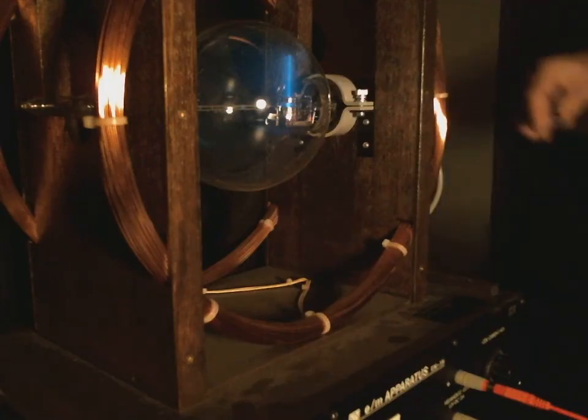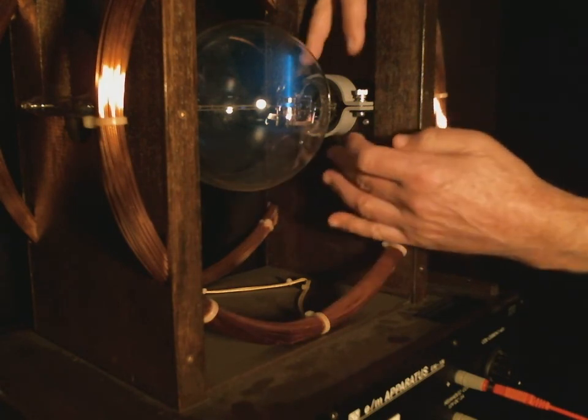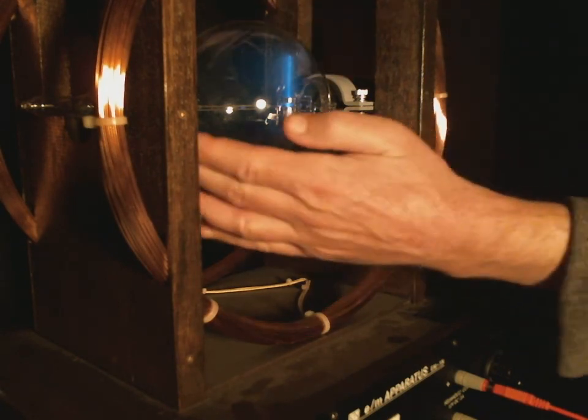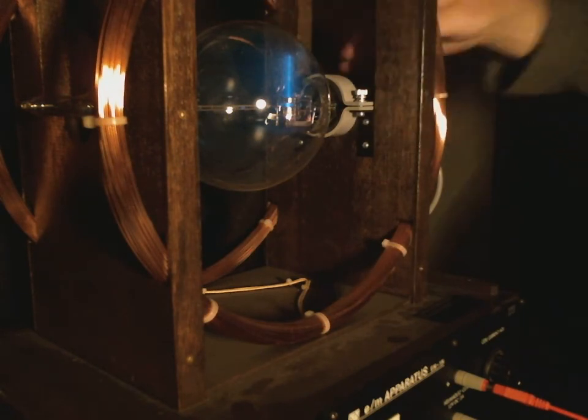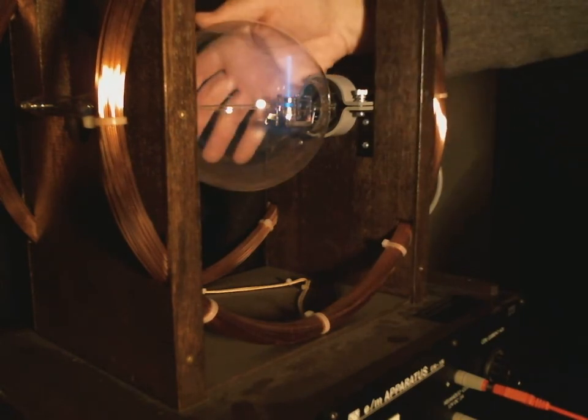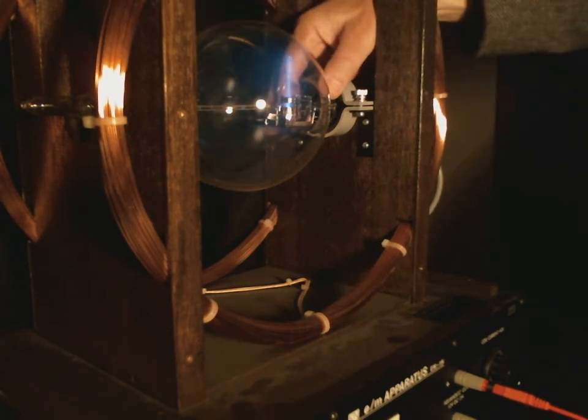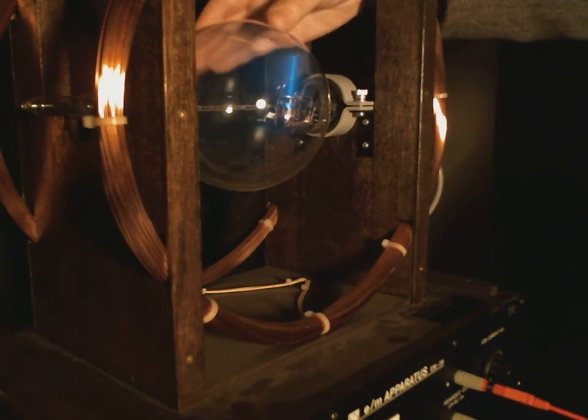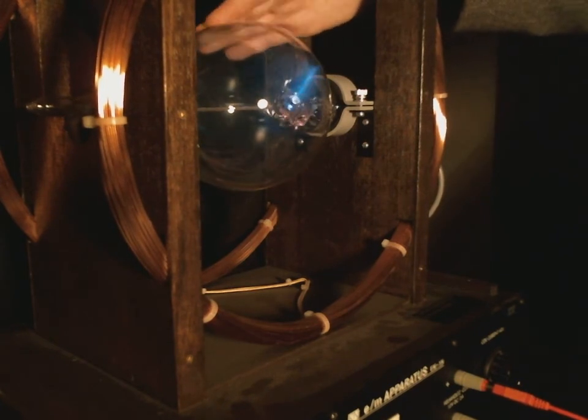One last fun thing here. I've got the vacuum tube held in here with these two yokes, here and here. And, I've loosened up the yokes, so I can now rotate the vacuum tube. So, I've got the magnetic field turned off. The beam is going straight up. If I now rotate the beam, rotate the tube this way, you can see that the beam is coming out in whatever direction I rotate it to.